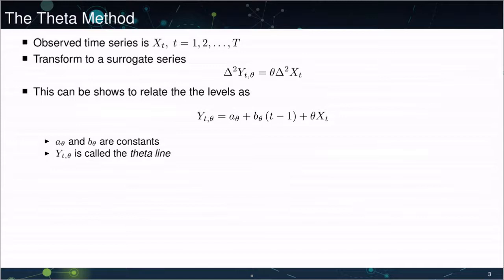The idea here that underlies this is to transform the data into a surrogate series, to forecast the surrogate series, and then to finally recover the forecast of the original series from forecasts of the surrogate series. The process gets its name from this idea that the surrogate series, that is, delta squared Yt of theta, should be equal to a parameter theta times the second difference of Xt.